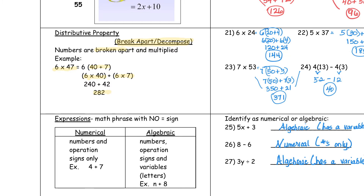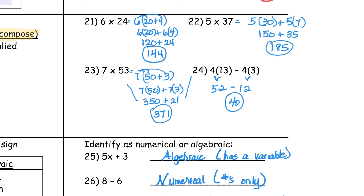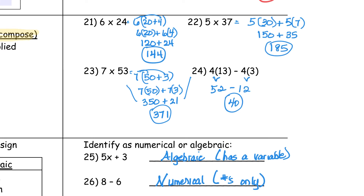Let's take a look at numbers 21 through 24 and see how you did. Number 21, the answer was 144. Number 22, the answer was 185. Number 23, the answer was 371. And number 24, the answer was 40.